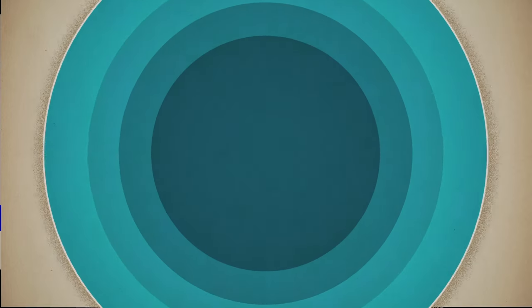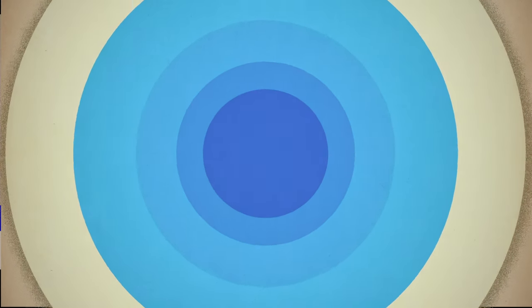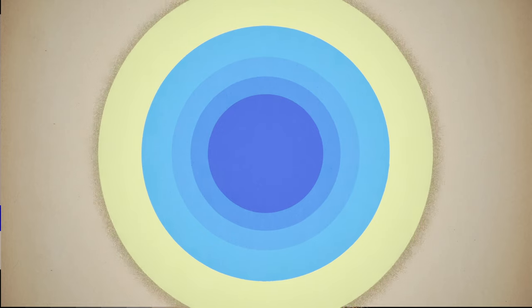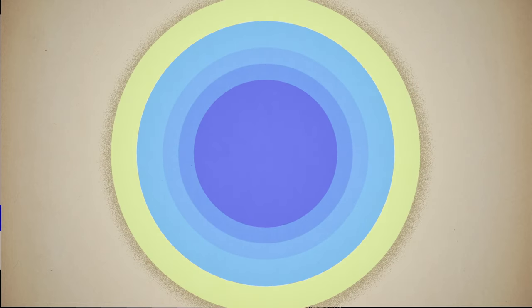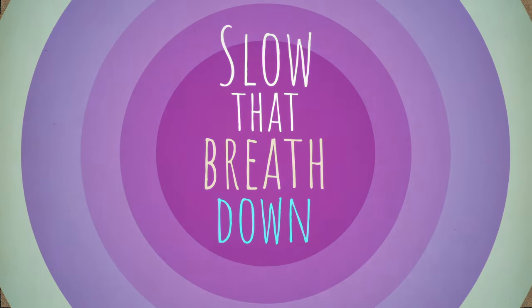Make your breath like a circle, seamlessly transitioning from inhale to exhale. Whenever you feel stressed, or want a little more calm, or more oxygen, or just need to balance your nervous system, slow that breath down.